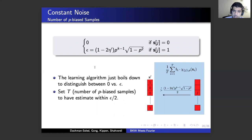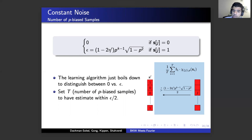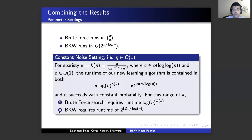The learning algorithm has to distinguish between zero and a parameter we call epsilon. We set T, the number of p-biased samples, to have an estimate within epsilon over two distance. In our paper, we show that for sparsity k equal to n over log^(1+1/c) n for certain ranges of the parameter, we have an algorithm which runs faster than both brute force and the BKW algorithm, where 'faster' is captured asymptotically in the exponent.